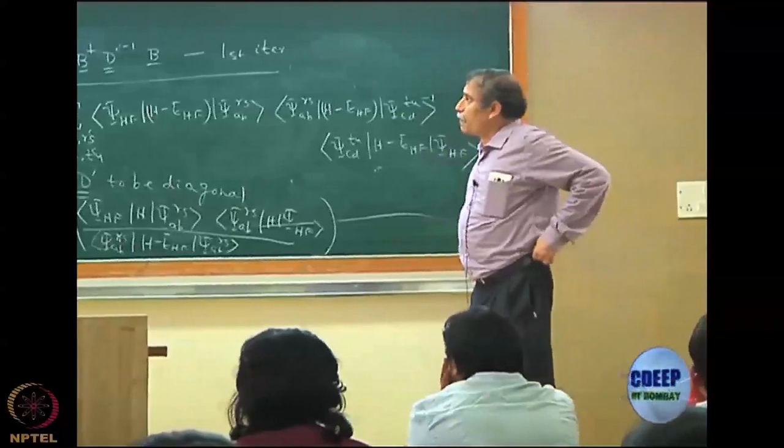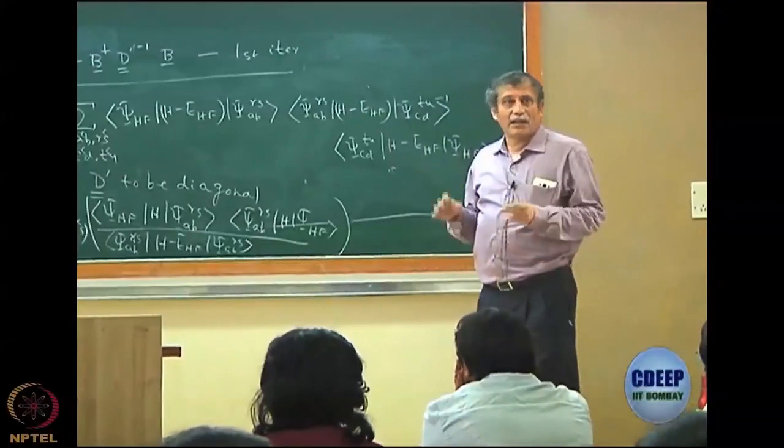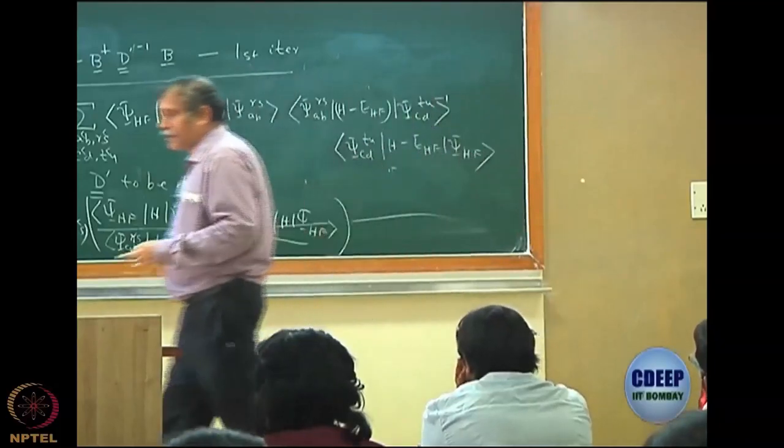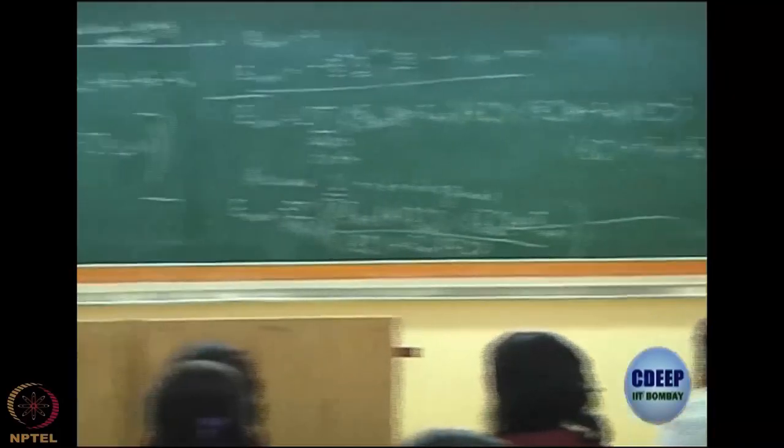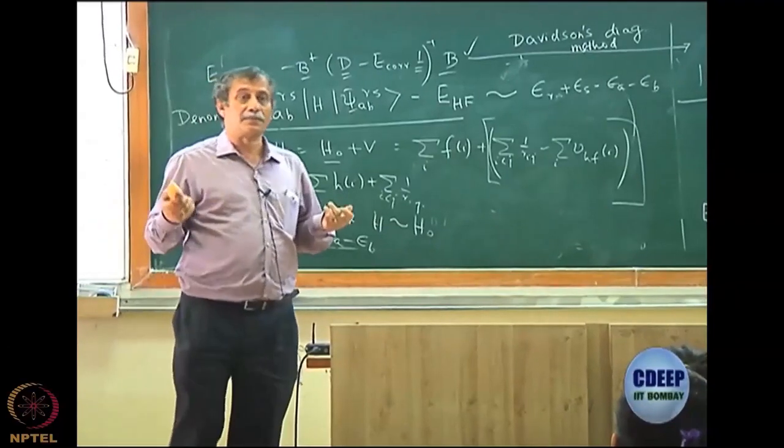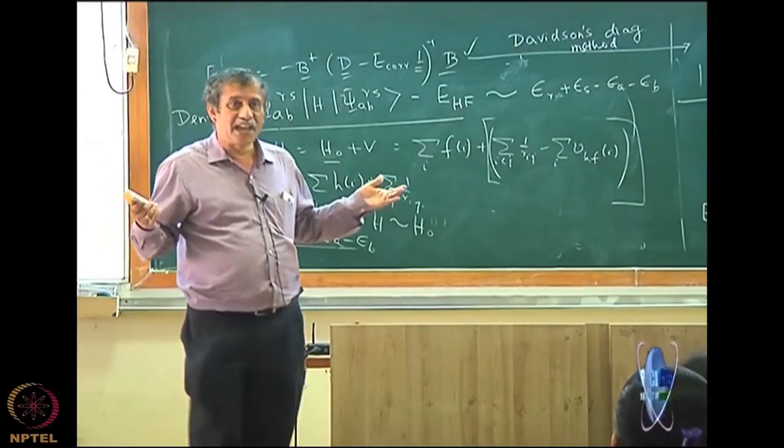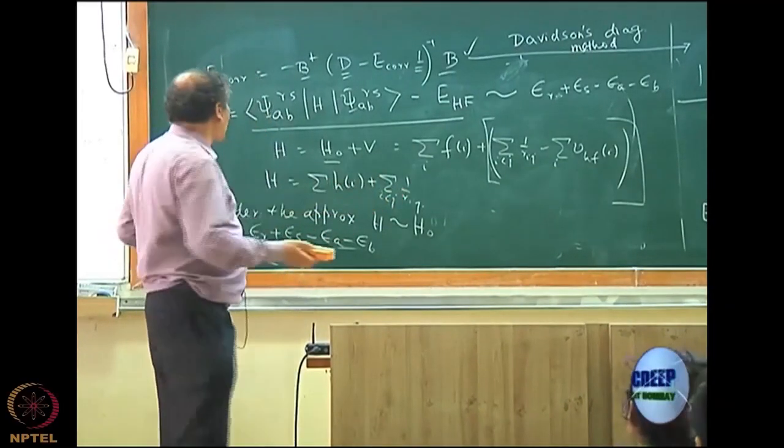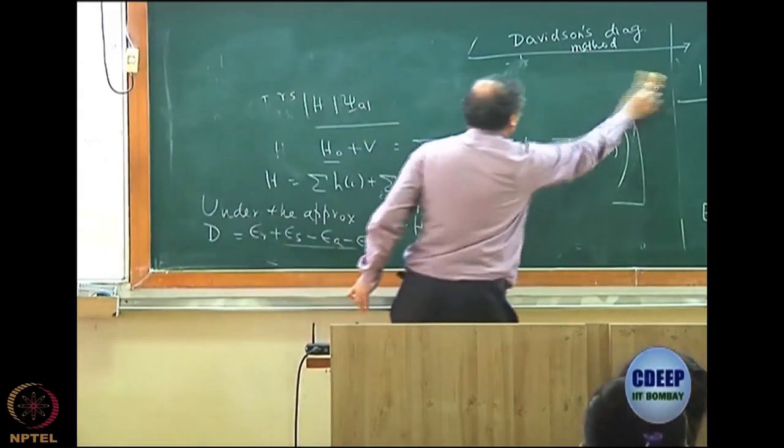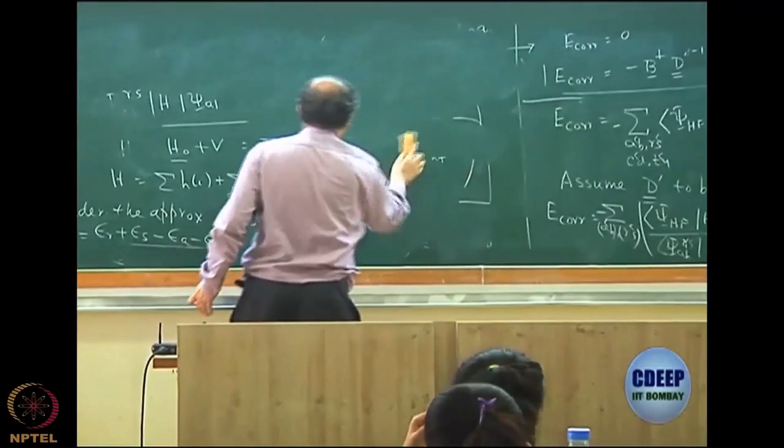What we will do now is go back to the DCI and look at the structure of the DCI a little bit more and understand. However, before I do that, let me tell you that it is trivial to add singles and triples to the CI equation, something I would not like to do in detail, but at least SDCI is important to do. So let me tell you the structure of the SDCI.